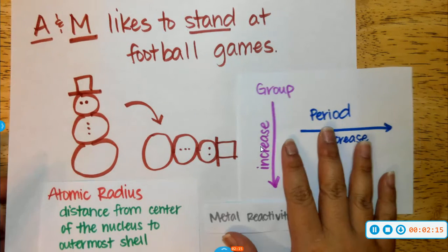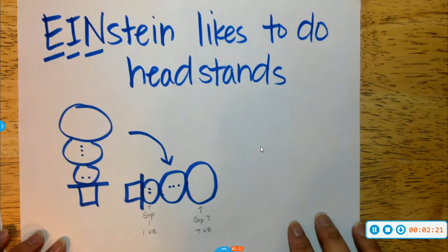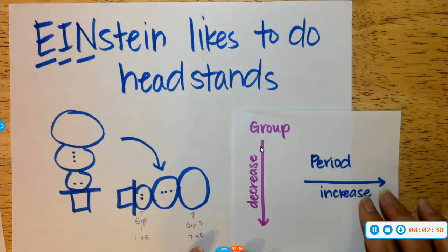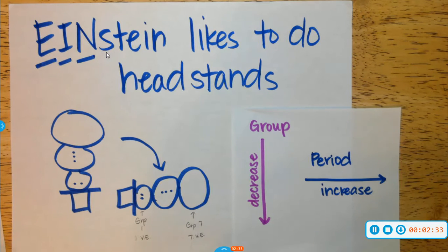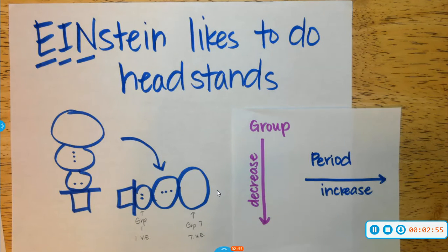Another little trick to remember the other trends is the saying: Einstein likes to do headstands. But this time it's going to be the opposite, because we can think of Einstein because of the crazy hair — he's kind of weird and crazy. So Einstein likes to do headstands, which means we have an upside-down snowman. The size of his body decreases as we go down, and then if he falls over, as we go across the period, our trend is going to increase.